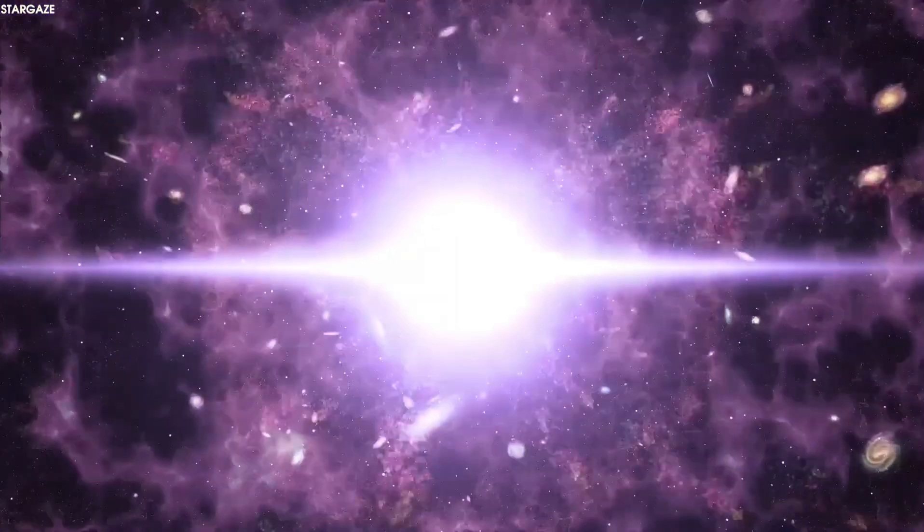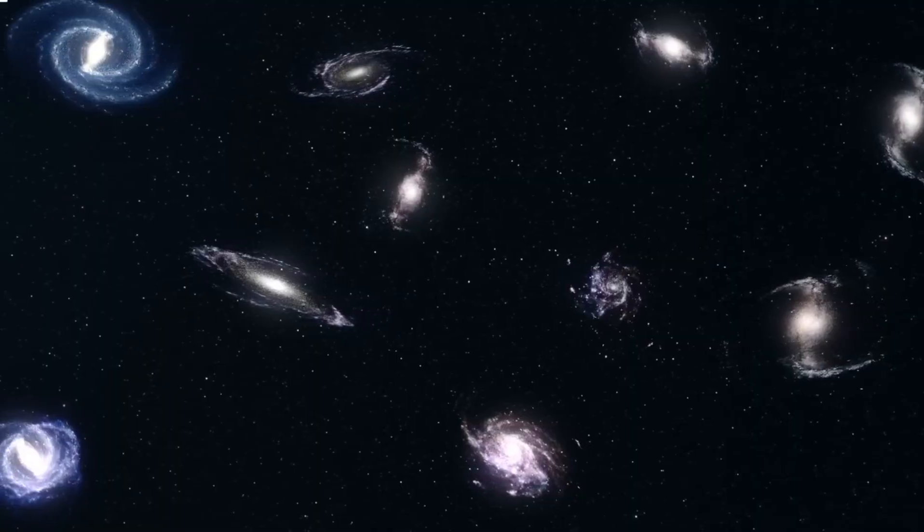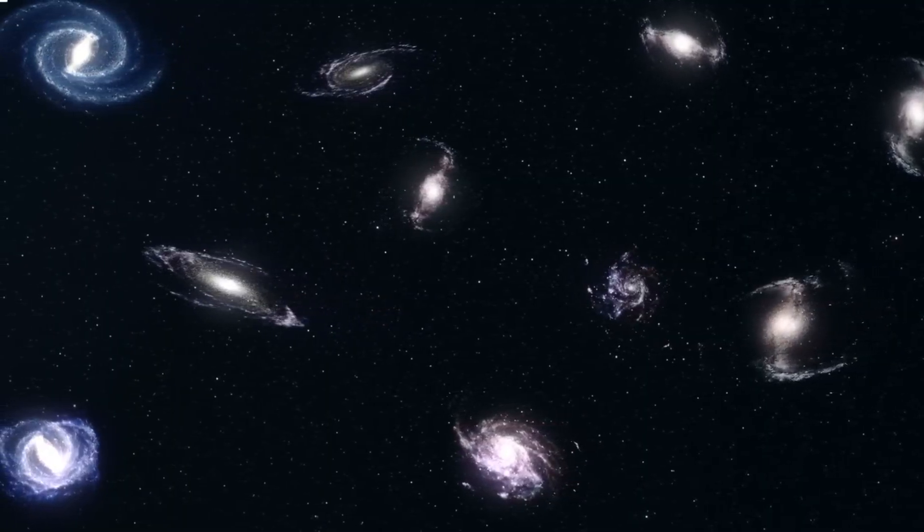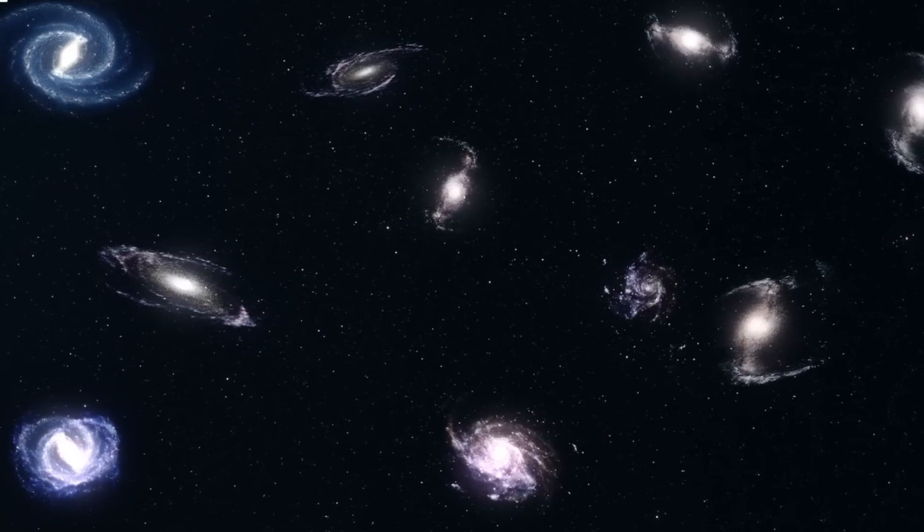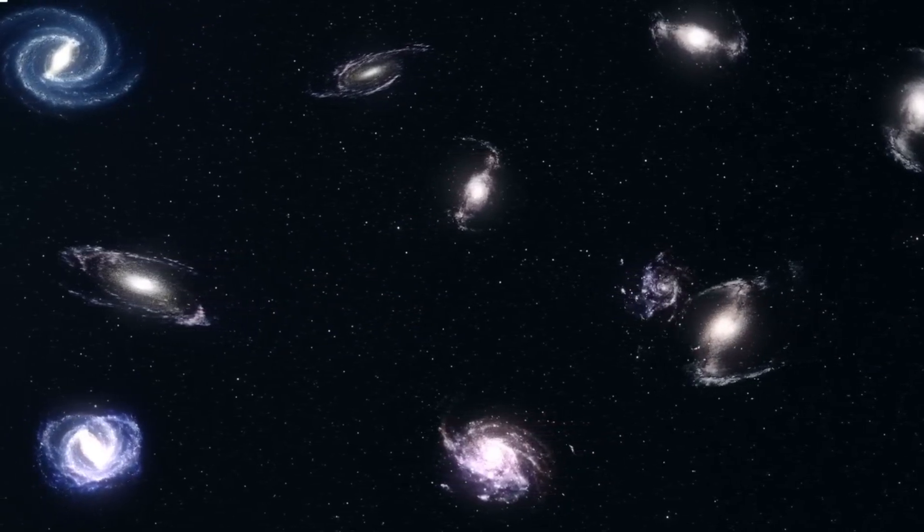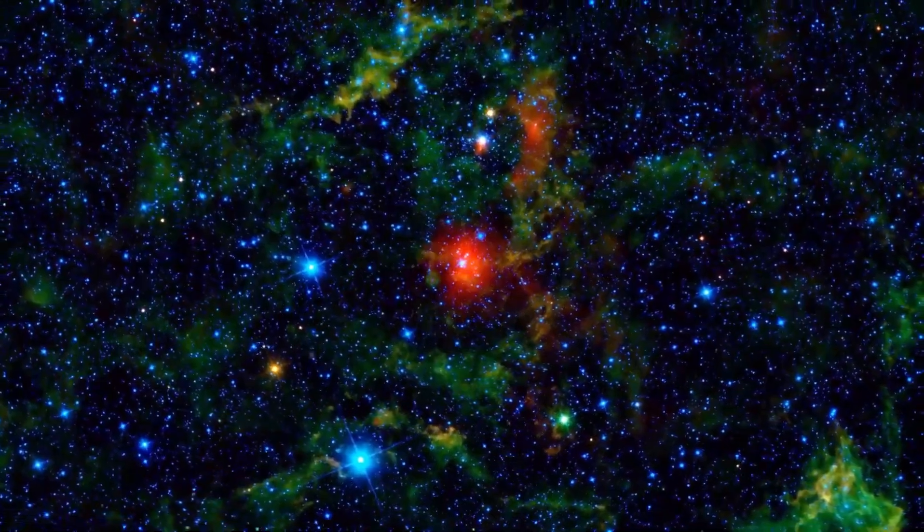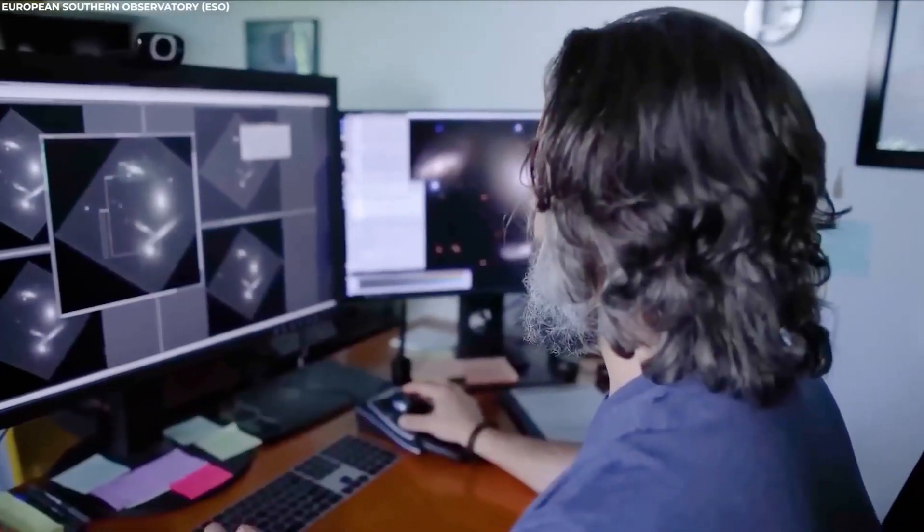These dark matter halos are believed to have acted as gravitational sinks for normal matter, seeding the subsequent formation of galaxies in the early universe. The telltale motion of the stars they shepherd betrays their endurance to this day. Such halos still surround galaxies like our own, majestic but invisible sculptors of the modern cosmos.